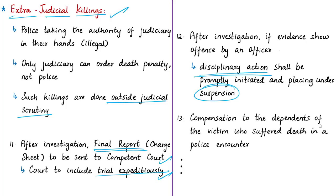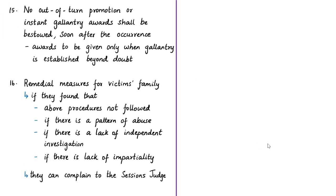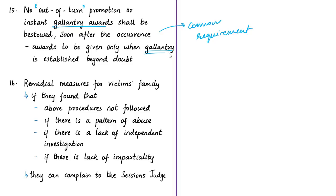If it is proved that an innocent was killed or that extrajudicial killing occurred, compensation must be granted to the victim's dependents. Regarding promotion of officers involved, no out-of-turn promotion or instant gallantry rewards shall be bestowed on officers soon after such an incident. The Supreme Court allows rewards only when the gallantry of the concerned officers is established beyond doubt, following all the required procedures.